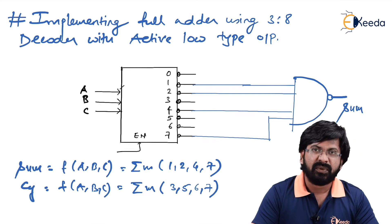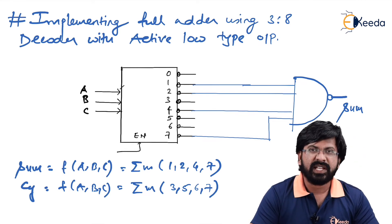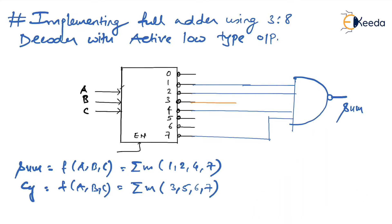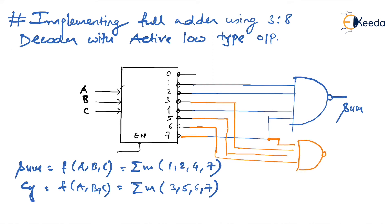Now let us develop it for carry also. For carry, we will take Y3, Y5, Y6, and Y7. Y7 can be shared from the same line already used for sum. These four lines are connected to a NAND gate and the output of the NAND gate is considered as carry. Instead of using OR gates, I have used NAND gates. Let me again justify how it works.